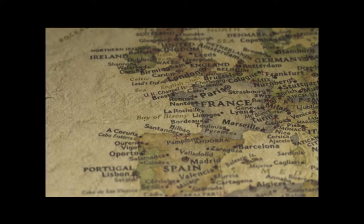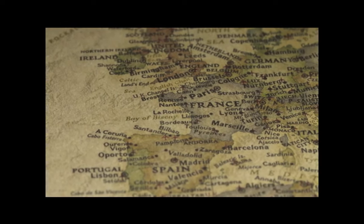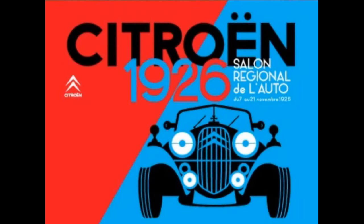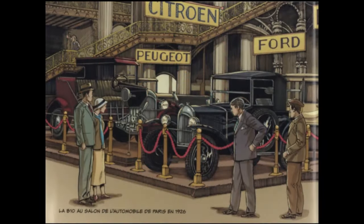Our story begins in France at the 1926 Paris Auto Show. French industrialist and automotive pioneer André-Gustave Citroën presented his company's all-new B14 line of automobiles in a display alongside Peugeot and Ford.